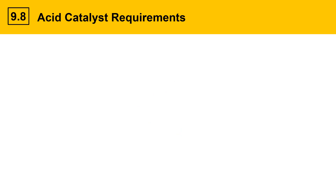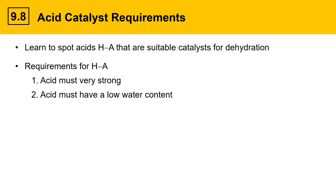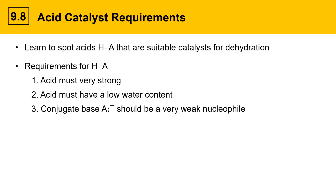There are certain requirements for acid catalysts in dehydration reactions of alcohols. You should learn to spot suitable acids, abbreviated HA. They need to be very strong, have a low water content — many concentrated acids have large amounts of water and would not be good choices — and the conjugate base A- should be a very weak nucleophile.